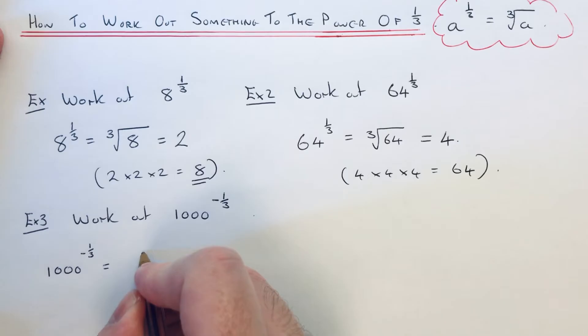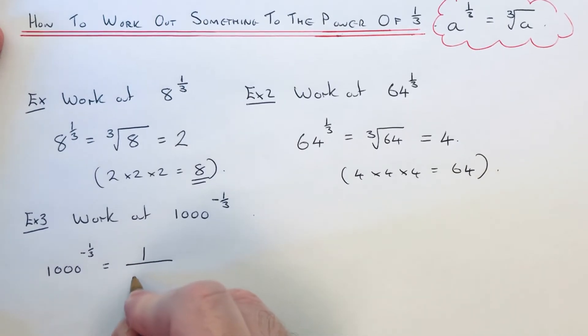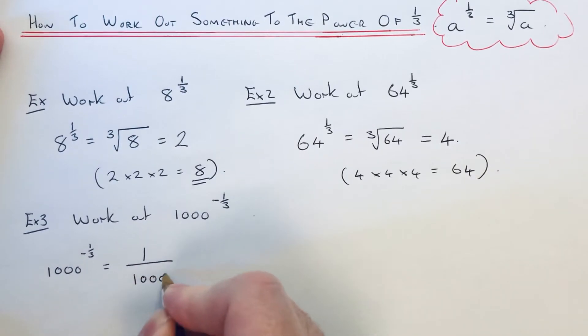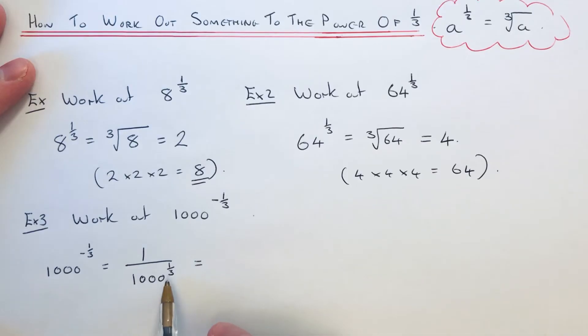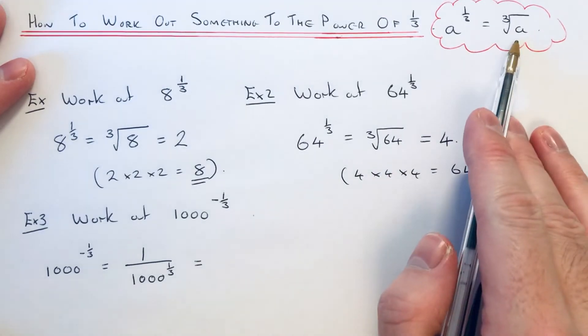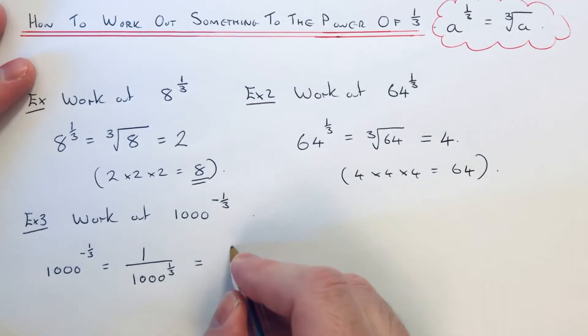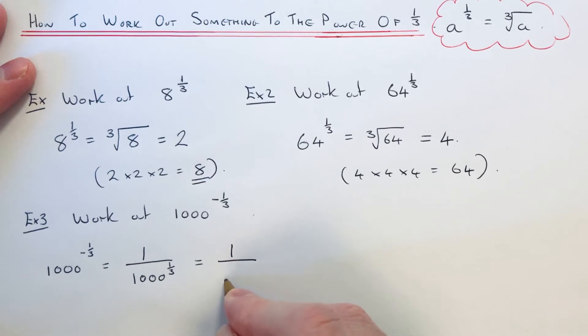So first of all we need to write it as one over 1000 to the power of one third. That is your negative power rule. And then we can apply the rule up here. We know that a power of a third means the cube root of the number.